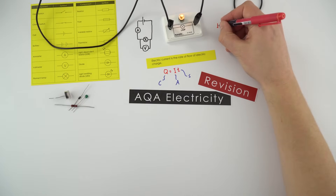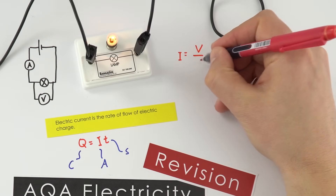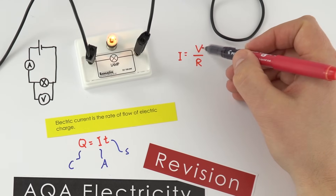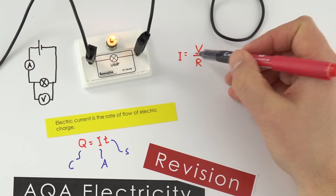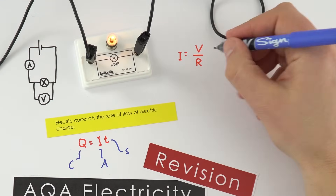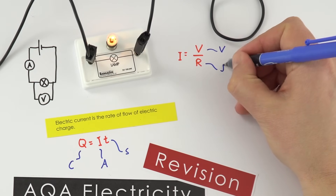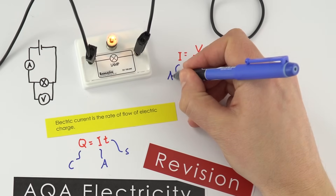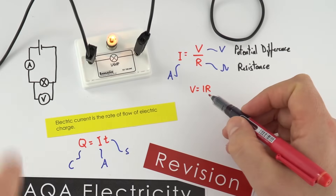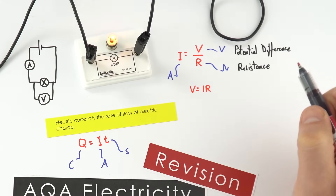We can think about the electric current going through a component — it depends upon the potential difference V across it and also the resistance of that component. A bigger potential difference gives a bigger current, but a bigger resistance reduces the current. V is the potential difference measured in volts, R is the resistance measured in ohms, and current is measured in amps. A more useful form of the equation is V = IR, and you can apply this to any part of the circuit.